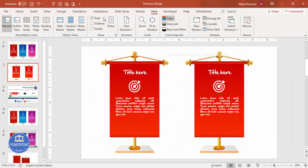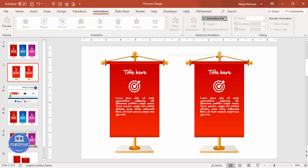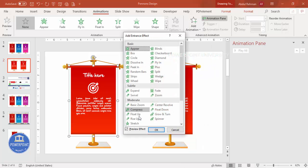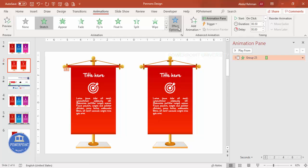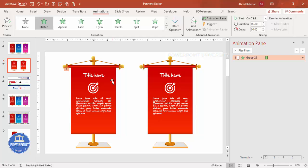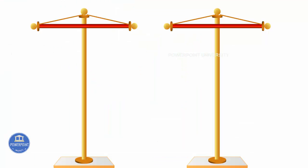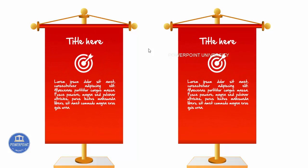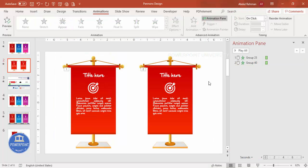For animations, close the Format Background panel, go to Animations, and enable the Animation Pane. Select the first banner group, go to Add Animation > More Entrance Effects, and select 'Stretch.' Click OK, go to Effect Options, and choose 'From Top.' Then use Animation Painter to apply the same animation to the other banners. In the slide show you can see a skeleton, and on each click the banners drop down.